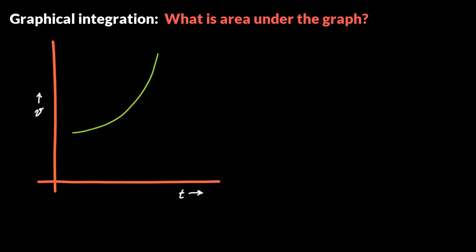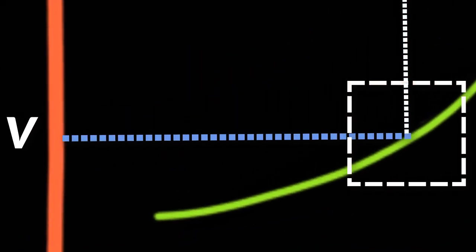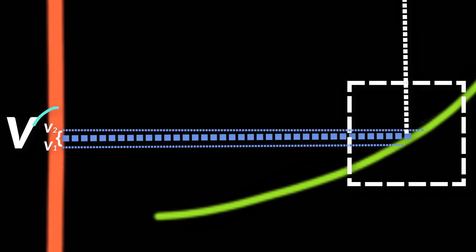So if you take a velocity-time graph like this one and consider a very small time interval dt, say between 3 seconds and 3.00001 seconds, and let us say in this time interval the velocity of the particle is v. You could say that within the time interval dt also the velocity is changing, and if you zoom in you can see that it indeed does change. But the change is so small that we can agree to assume that it is one single value v.